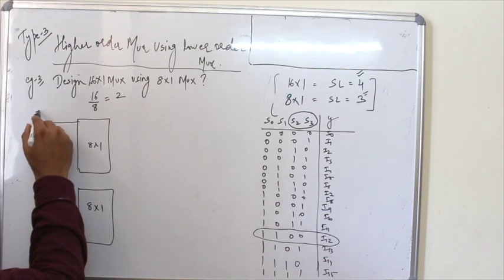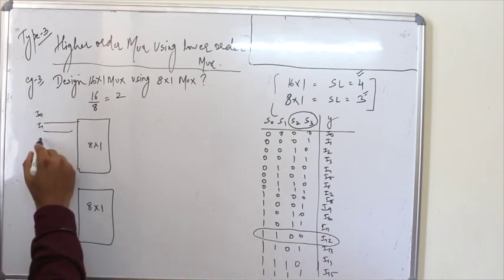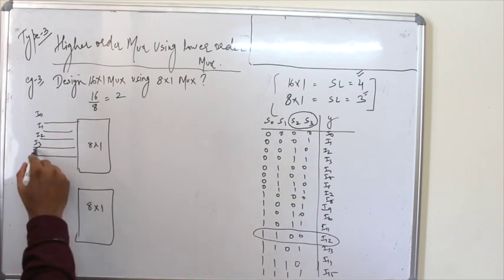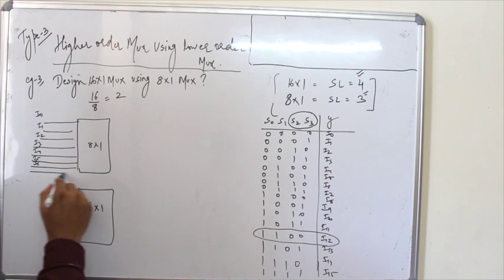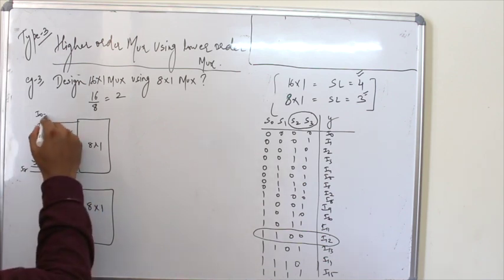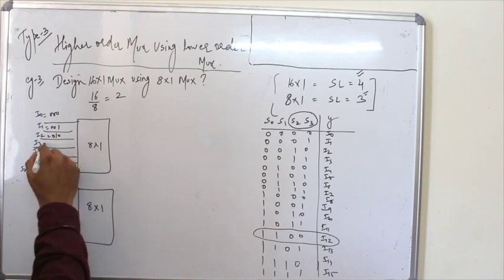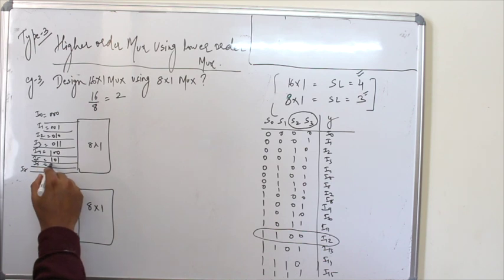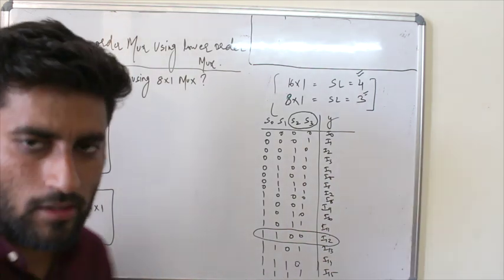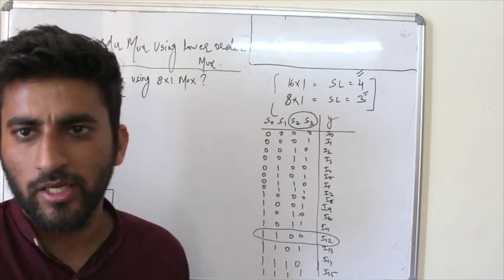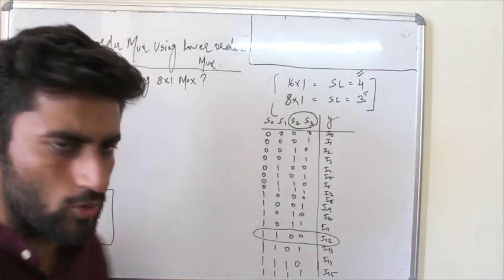I am starting with I0, I1, I2, I3, I4, I5, I6, I7. With 000, 001, 010, 011, and so on. In each input corresponding we are writing the decimal value.